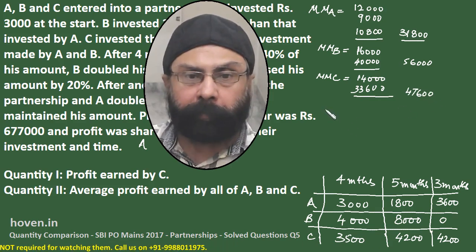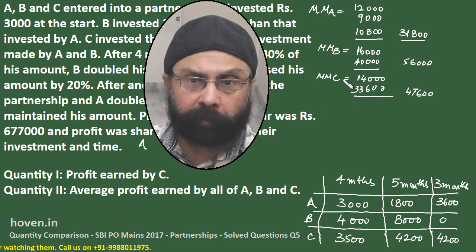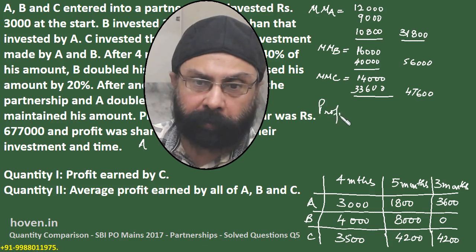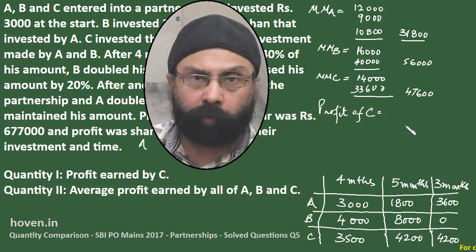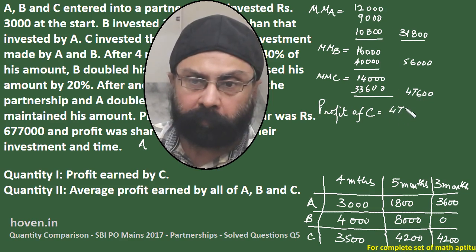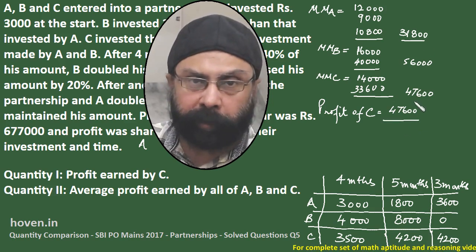The profit will be in proportion to the money months. The profit of C will be equal to C's money months (47600) divided by the sum of all money months.